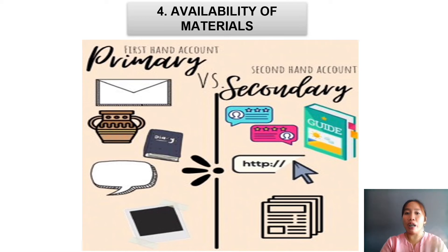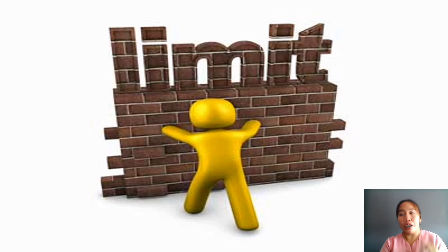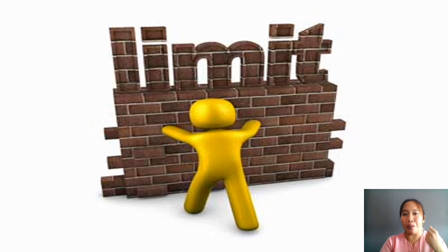This includes primary and secondary sources of information. As a researcher, you have to consider your own limitations. These limitations refer to location, target population, methods or instruments to be used, time frame, or anything that may restrict or hinder you in conducting your study. Other limitations include personal limitations like the level of understanding of the topic, financial status, availability of resources at home, and mental and physical health or stability.